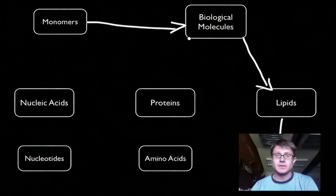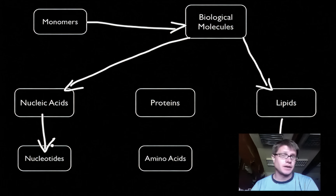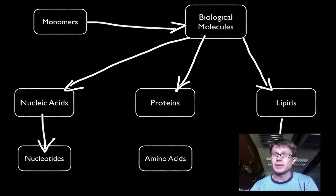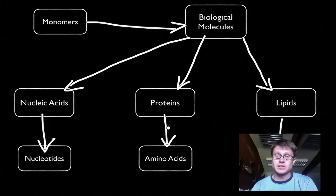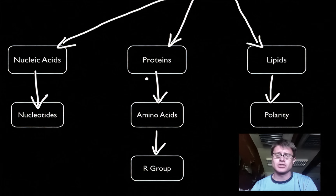Let's go to nucleic acids. Nucleic acids are going to be the DNA and the RNA. The building blocks of those are nucleotides, which are simply a sugar, a phosphate group, and a nitrogenous base. Why are nucleic acids important? They carry genetic material and pass it from generation to generation. Next are proteins. Proteins make up almost everything you're looking at right now — the building blocks of proteins are amino acids. What makes amino acids different is their R group, a portion of the amino acid that differentiates them and gives them important characteristics in the structure of a protein.